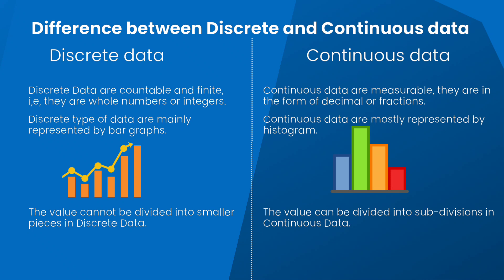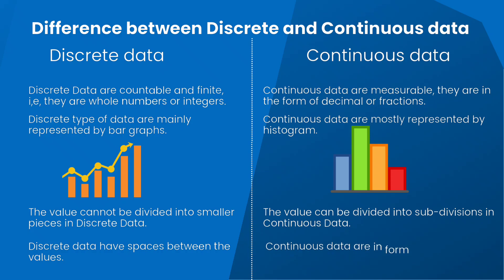Discrete data have spaces between the values, but continuous data are in the form of a continuous sequence. The key difference is that discrete data contains integers or whole numbers, whereas continuous data stores fraction numbers to record different types of data.